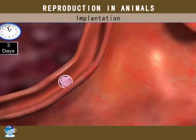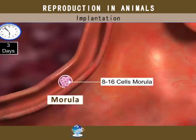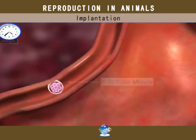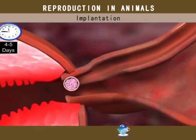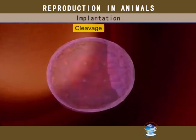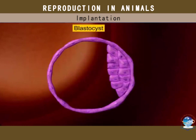About three days after fertilization, the zygote has 8 to 16 cells and is called a morula. Over a period of about two days, the morula descends into the uterus and transforms itself into a blastocyst, which is a hollow bowl containing about 100 cells that are arranged in two layers.